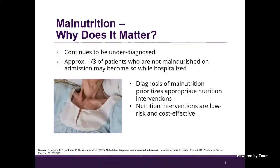Malnutrition continues to be underdiagnosed. Why does this actually matter? Approximately a third of patients who are not malnourished on admission may become so during their hospitalization. So it's important that we acknowledge this and capture it in the medical record. When we diagnose malnutrition, it makes it a priority — it's on the hospital problem list as a medical issue that needs attention and will be in the patient's past medical history. A diagnosis of malnutrition prioritizes appropriate nutrition interventions, and we know that nutrition interventions are low risk and cost effective.